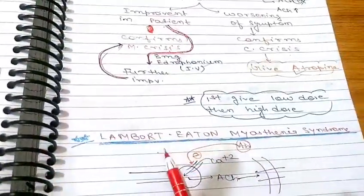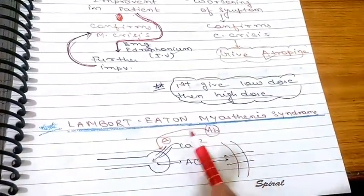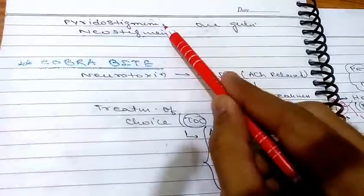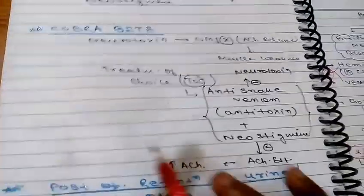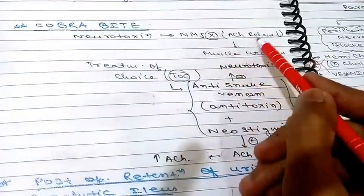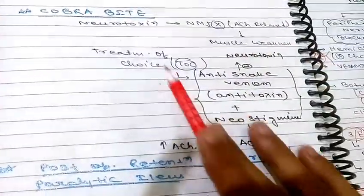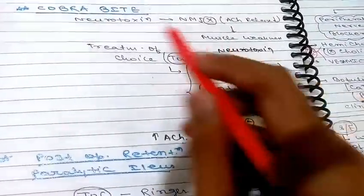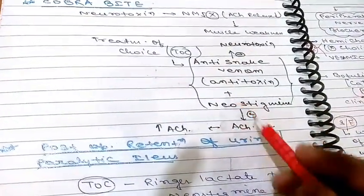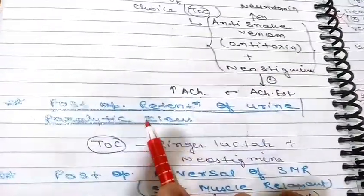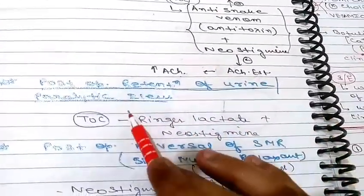Another condition is Lambert-Eaton myasthenic syndrome — in this, the calcium channels on the pre-synaptic membrane are damaged by antibodies, decreasing acetylcholine release, leading to muscle weakness. We also give pyridostigmine and neostigmine for this. Next is cobra bite — the neurotoxin blocks the neuromuscular junction receptor, decreasing acetylcholine release and causing muscle weakness. Treatment of choice: first give anti-snake venom and antitoxin for the neurotoxin, along with neostigmine to inhibit acetylcholinesterase and increase acetylcholine activity.